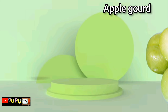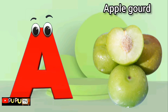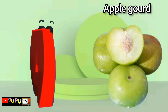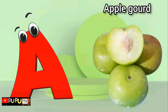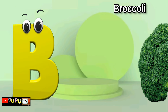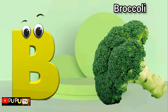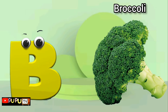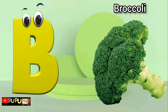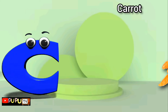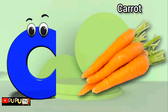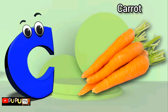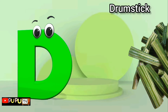A is for apple gourd, apple gourd. B is for broccoli, broccoli. C is for carrot, carrot. D is for drumstick.